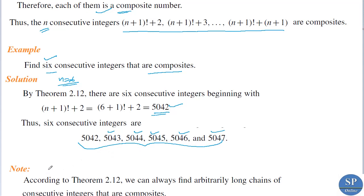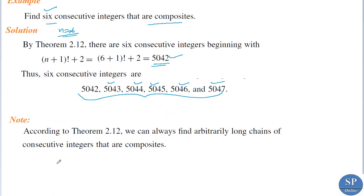According to Theorem 2.12, we can always find arbitrarily long chains of consecutive integers that are composite. That is, for any positive integer n, no matter how large, we can find n consecutive composite numbers.